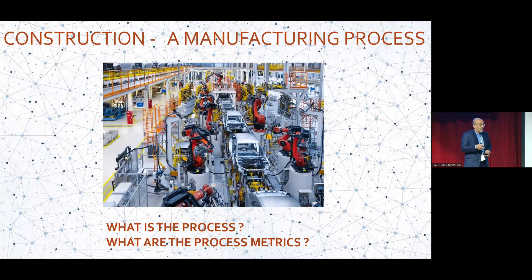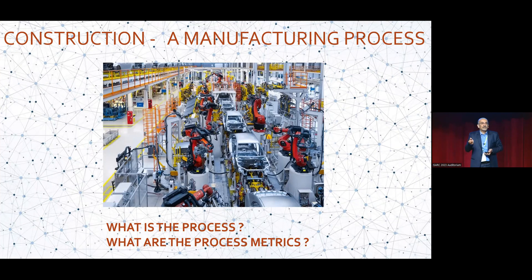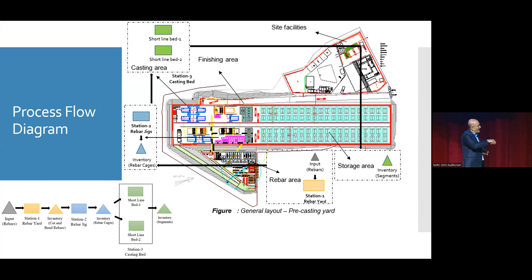If we talk about construction as manufacturing, the question Ashutosh faced on site is: I have this precast yard for bridge construction — what is the process and what are the process metrics? The site was primarily looking at cycle time. If we look at the schematic of the yard, the process was in the following steps: cutting and bending of rebars, tying of rebars into cages, and two casting beds where the segments were cast. These were then transported to storage. Beyond this, the segments are taken to the bridge and assembled.